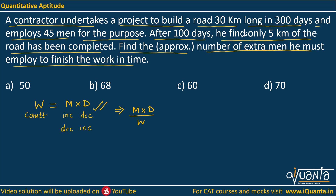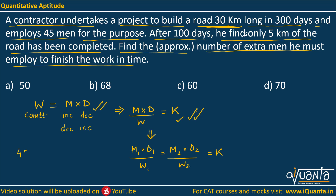I can further rewrite this relation as M × D / W = constant k. So here in the question, the only task is to build a road of 30 kilometers, meaning the work is the same. We can rewrite this relation as M1 × D1 / W1 = M2 × D2 / W2, because if the work is the same then the ratio is always constant equal to k — that's why we can equate these two.